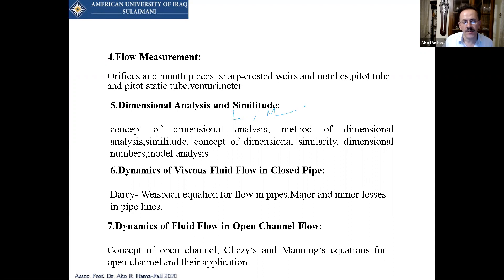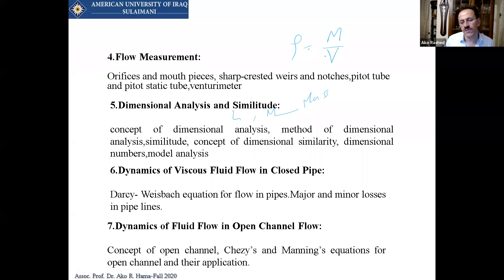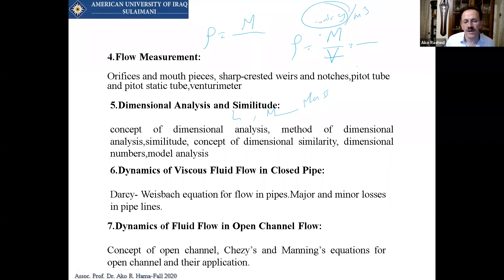In dimensional analysis we also use M for mass. Rho, the specific density, equals mass over volume. For water, that is 1000 kg/m³. In dimensional analysis, rho equals M divided by L cubed. This is the dimensional representation of density definitions.